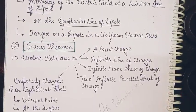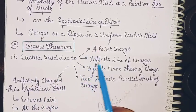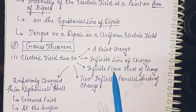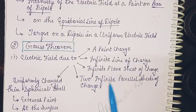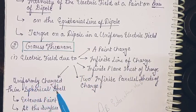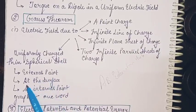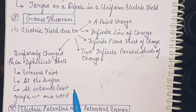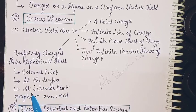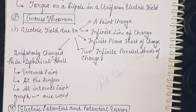Now Gauss theorem: electric field due to a point charge, infinite line of charge, infinite plane sheet of charge, two infinite parallel sheets of charge, and uniformly charged thin spherical shell. For this you have three cases: external point, at the surface, and internal point. You must learn the graph also. One word questions are also framed from this derivation.